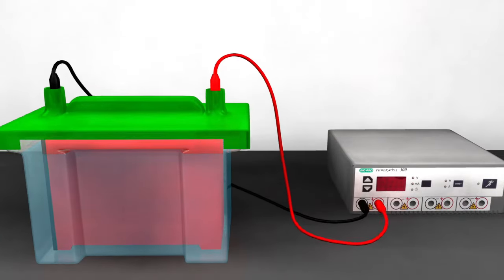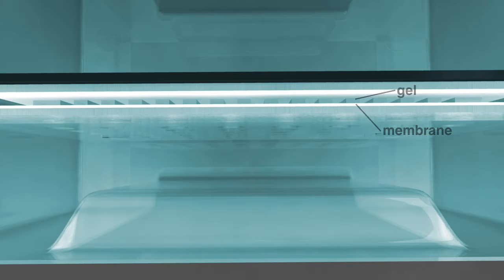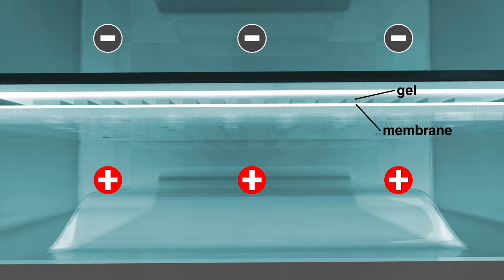The gel membrane sandwich is placed in such a way that the negative electrode is located closest to the gel while the positive electrode is located closest to the membrane.